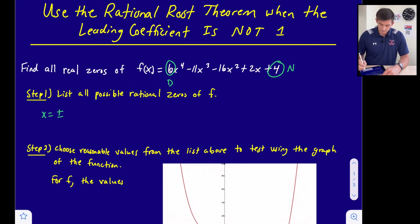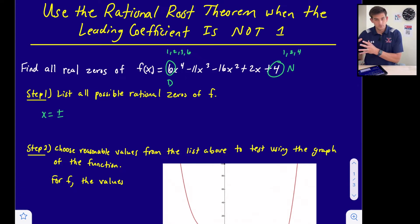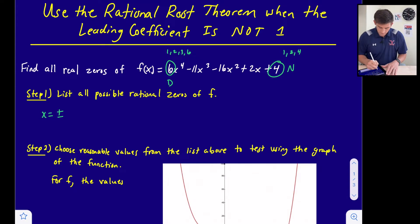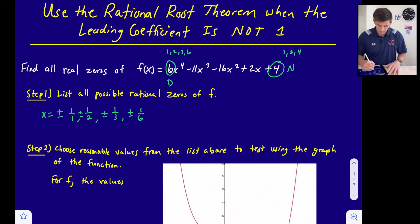The factors of 4 are 1, 2, and 4. The factors of 6 are 1, 2, 3, and 6. Now we build fractions using those numbers. With numerator 1 we get: plus or minus 1/1, plus or minus 1/2, plus or minus 1/3, and plus or minus 1/6 — using all four factors of 6 as denominators.